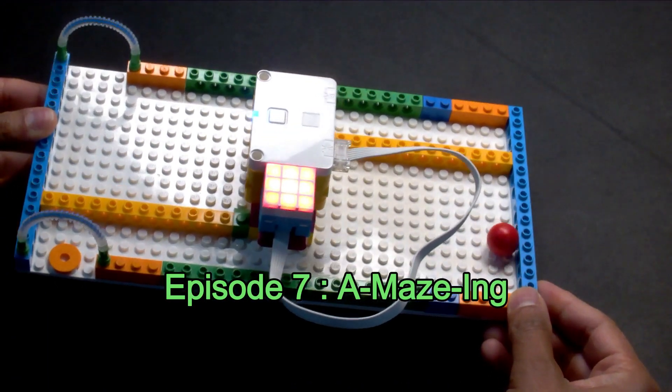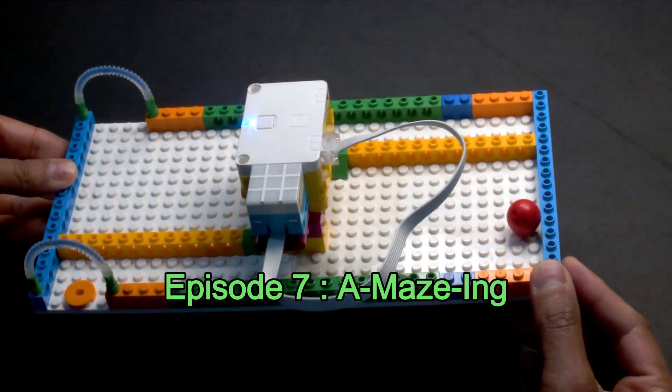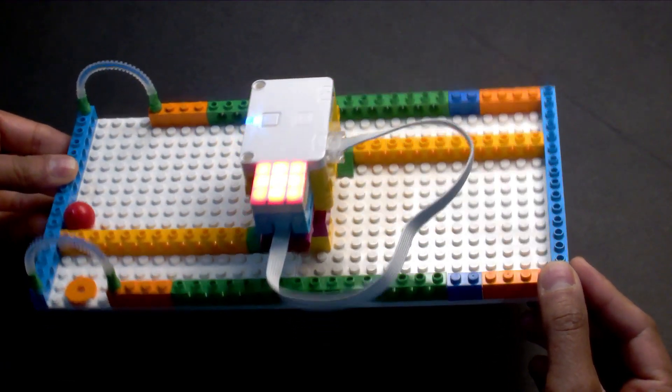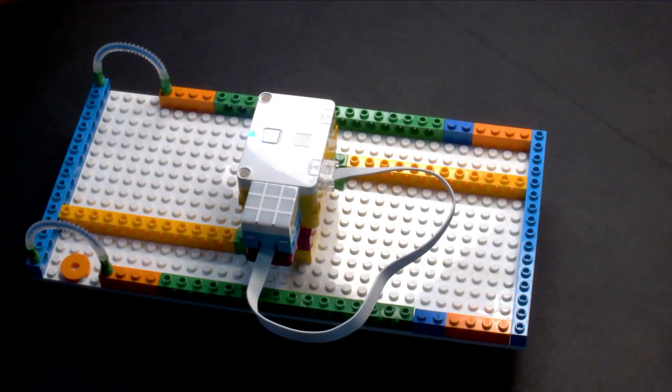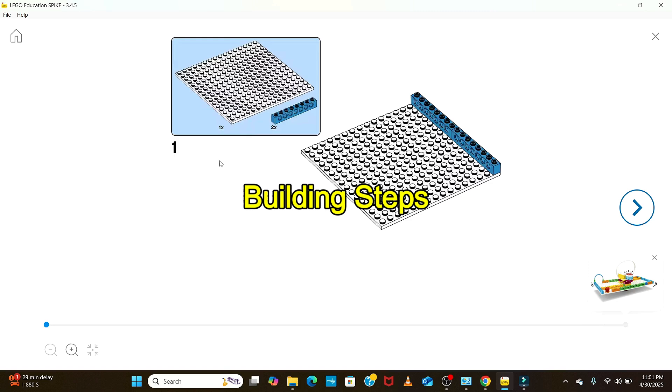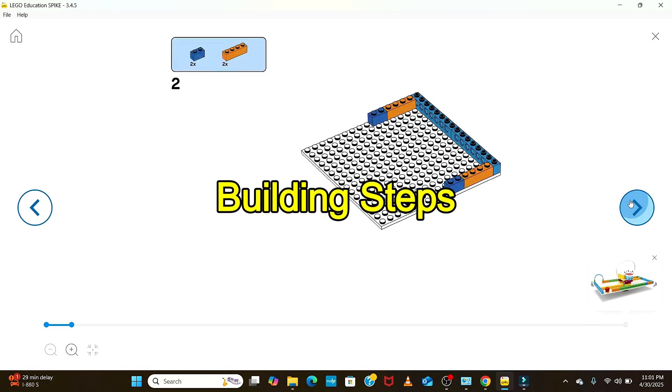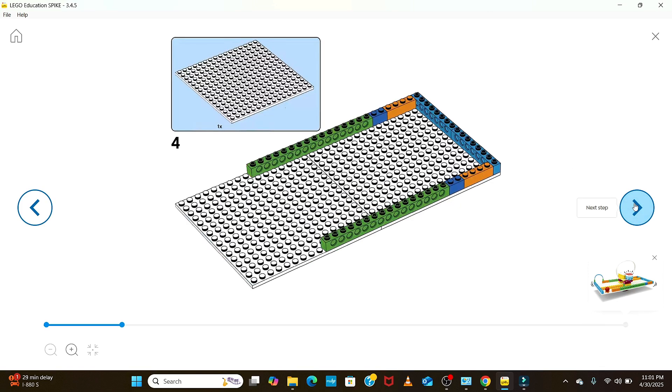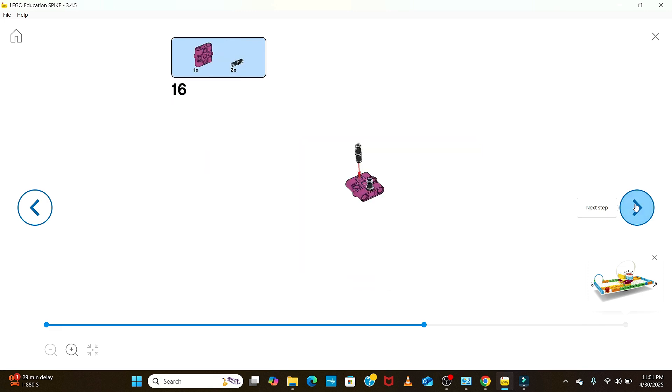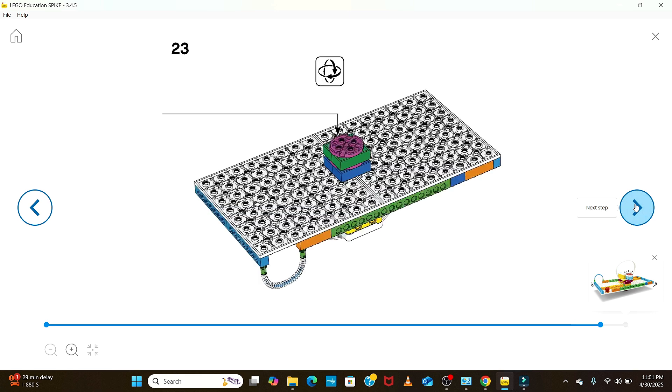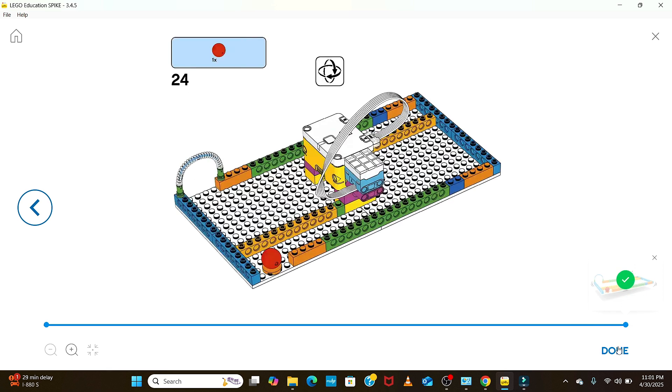This is the fifth project of the series and we are making the amazing. The building steps of the amazing can be found on the Lego Education website, where you can find step-by-step instructions on how to create the structure. Let's start with the project, where Zee is going to build the structure of this amazing and walk us through all the construction details involved.